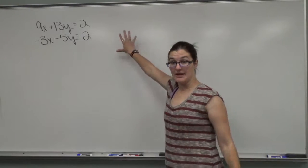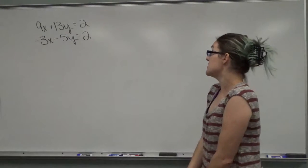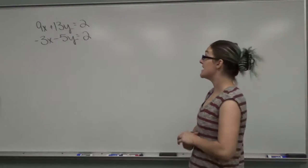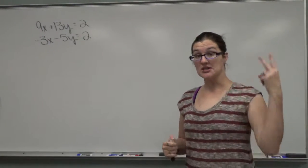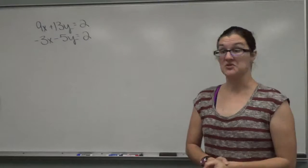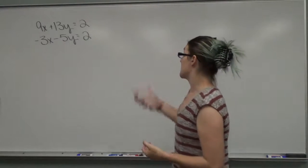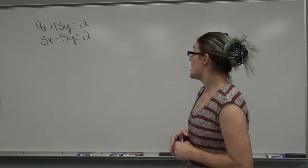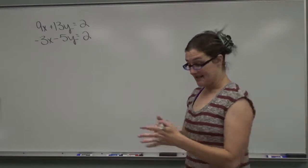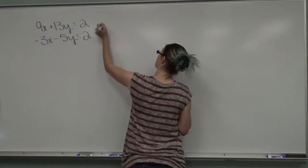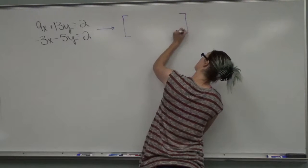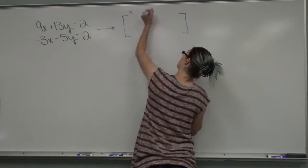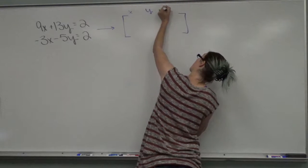So if we were to look at this right here, we have 9x plus 13y equals 2, and we have negative 3x minus 5y equals 2. So we have two equations and two variables, so that means we can get to an answer because you need the same number of variables as you have equations. If you're using matrices, first thing we would do is rewrite in a matrix. So in a matrix, you have a column for x, a column for y, and a column for z.